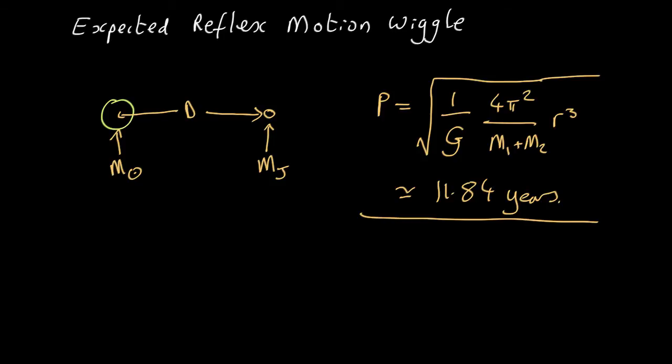Now, how big is the reflex motion wiggle? Remember the equation for this: r1, the reflex motion wiggle of the star, equals r over 1 plus m1 over m2. If you plug in everything here, that gives us 7.8 × 10⁸ meters, which sounds pretty big.